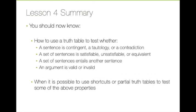Lesson four covers a lot of what we can do and show with truth tables. You should now know how to use a truth table to test whether a sentence is contingent, a tautology, or a contradiction, and when it isn't any of those. You should know when a set of sentences is satisfiable, unsatisfiable, or equivalent, and how to test whether a set of sentences entails another sentence, and whether an argument is valid or invalid. You should also know when it's possible to use shortcuts to reduce the work of constructing a truth table, and when partial or one-line truth tables can be used to test certain properties.